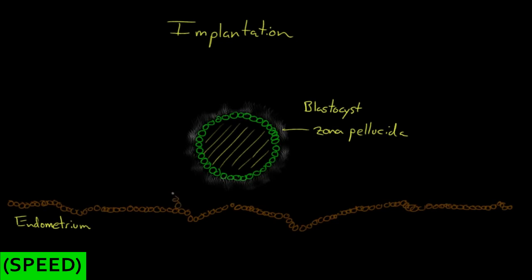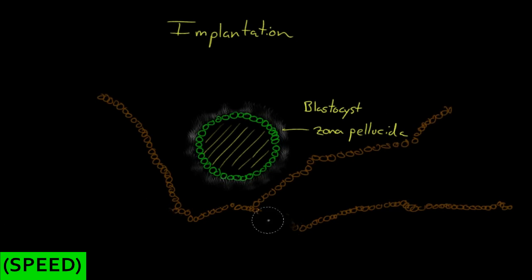But the endometrium isn't sitting still either. In fact, it's anticipating your arrival. And the endometrial lining is proliferating. It's developing these valleys here. And you come to rest in one of these valleys, and that's called a crypt.